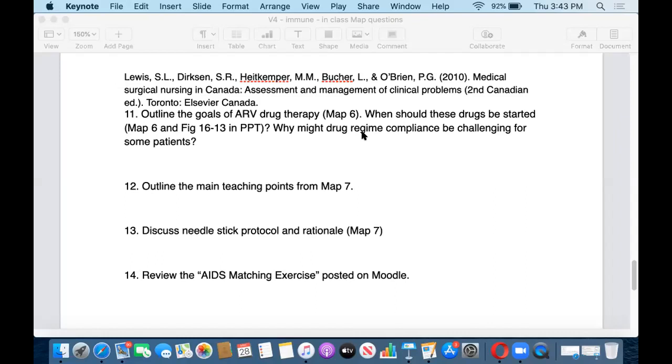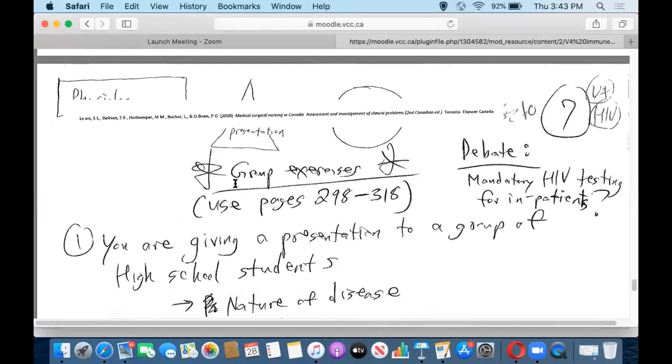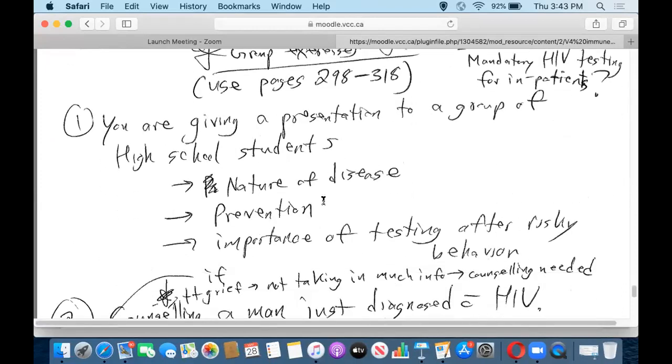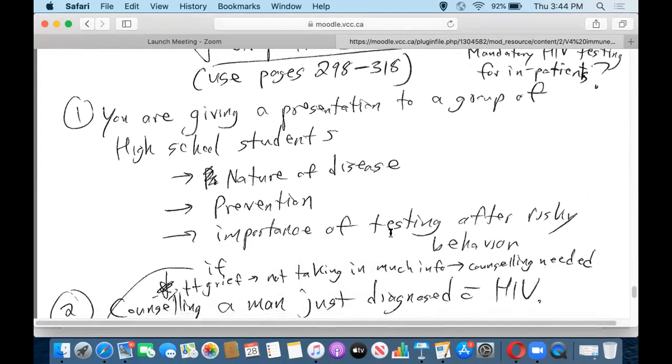The regime is challenging, can be challenging because of the side effects. So I'll outline the main teaching points from map number seven. Pretty straightforward stuff. If you're talking to a group of high school students, what would you tell them? Probably these three things here. What's the nature of the disease? How do you prevent transmission? And the importance of testing and protecting other people if you've engaged in risky behavior. Those would be probably three major points you'd want to teach students who are learning about this for the first time.